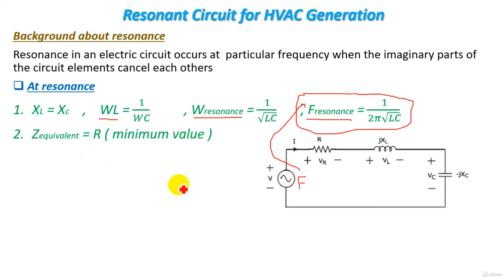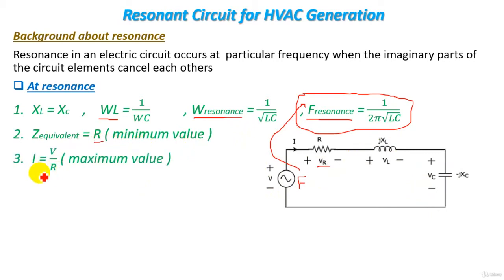Also, at this moment, as the effect of the capacitor cancels the effect of the inductor, the supply will see only the resistance. So the equivalent impedance at resonance will equal R, which is the minimum value. The current flowing in the circuit I will equal the supply voltage V over the equivalent impedance, which at resonance is R, so the current will be at its maximum value.